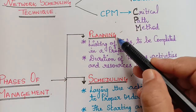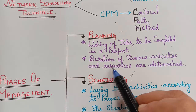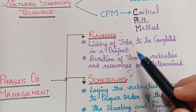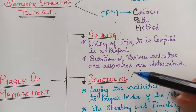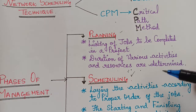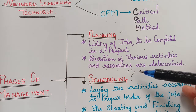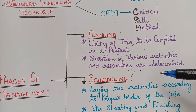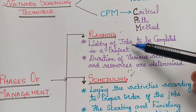The first phase is Planning. Planning involves listing the jobs to be completed in a project, and the duration of various activities and resources like men and materials are also determined. We need to list out the jobs that are to be completed, how long each activity will take, and what resources are required — such as materials, machines, men, money, and time. All these come under Planning.